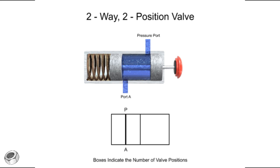The input port is typically labeled P for pressure. Outlet ports are typically given alpha characters starting with A. Other times, the letter stands for the destination of the fluid — for instance, the letter T would indicate a port connected to a tank. This is a fairly simple valve, so port labels are not required.